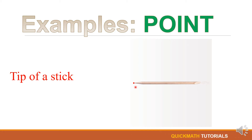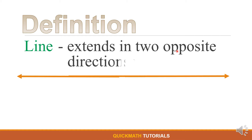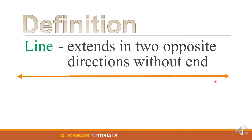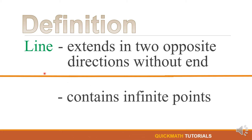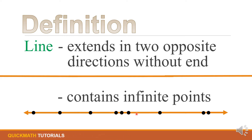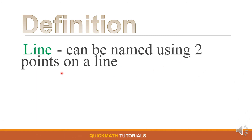Now let's move on to the line. A line extends in two opposite directions without end. For example, this line extends to the left side and the right side — in opposite directions, without end, or to infinity. Also, a line contains infinite points. There are so many points on a line that we cannot count all of them, because it has infinite points.